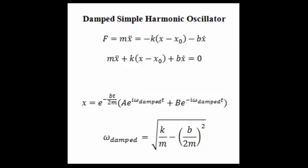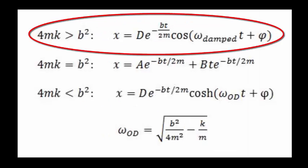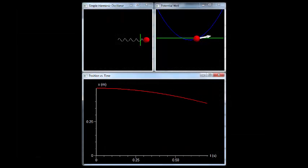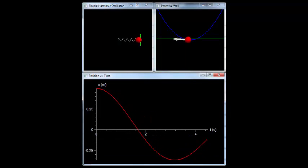Let's add damping. The damping force is in the opposite direction of the object's motion, so multiplying a damping factor b times the negative velocity gives the damping force. Solving this differential equation gives an equation for the position. Based on this solution, there can be three characteristic outcomes based on the value of omega damped. If omega damped is positive, the mass-spring system is underdamped. The mass oscillates around the equilibrium position as the amplitude decays until the mass is effectively at rest at the equilibrium position.